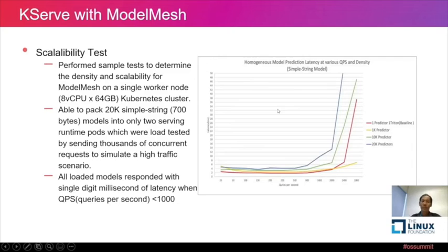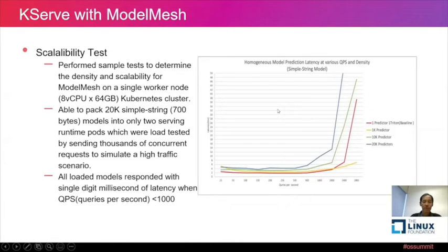We ran a scalability test in a fairly small Kubernetes cluster with only eight vCPUs and 64 GB of memory. We were able to deploy 20,000 simple string models into two serving runtime pods. We then sent thousands of concurrent inference requests to simulate a high-traffic scenario, and Model Mesh achieved single-digit milliseconds of latency when the QPS is less than 1,000. That's pretty impressive.